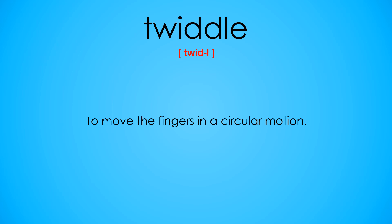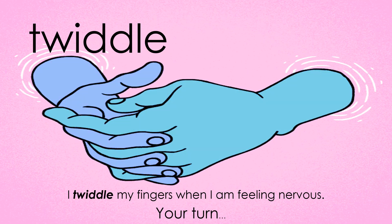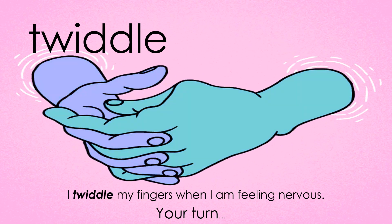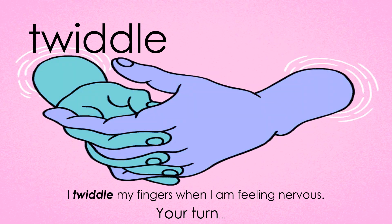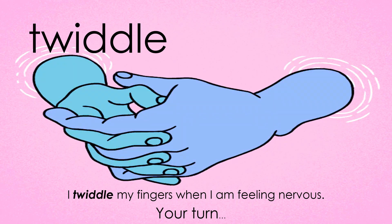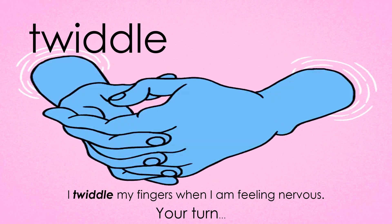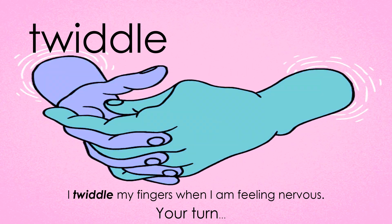Twiddle: to move the fingers in a circular motion. Example: I twiddle my fingers when I'm feeling nervous. Your turn — make a sentence including the word 'twiddle'.